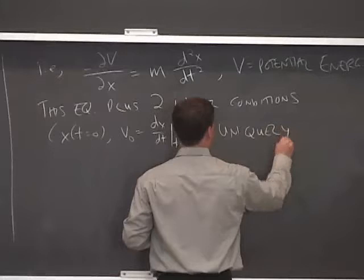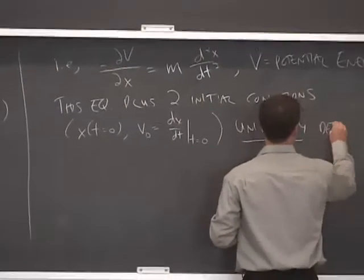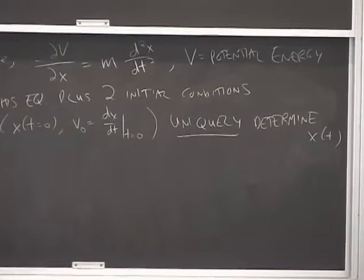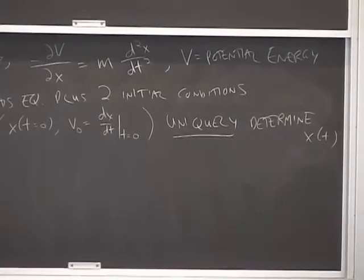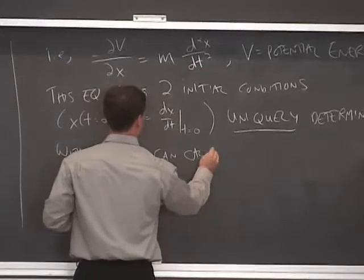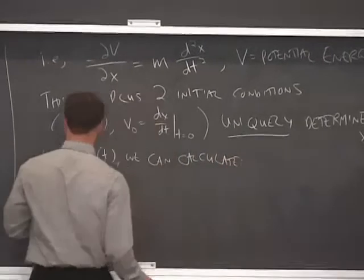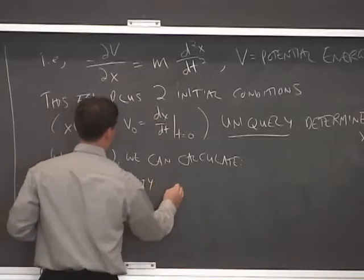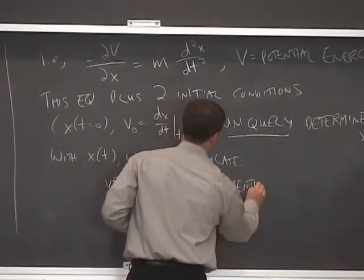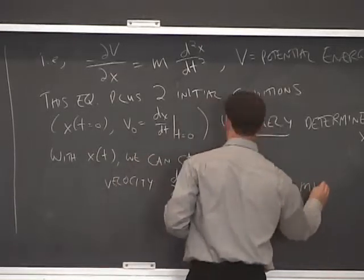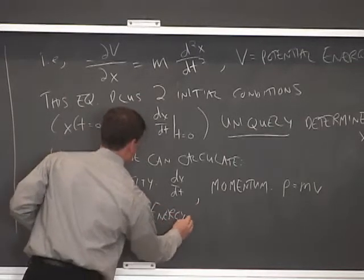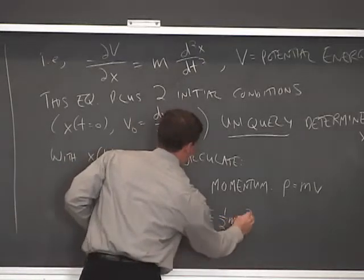This uniquely determines x. And of course, once x is known, then we can calculate many other parameters of interest. So with x, we can calculate parameters such as velocity, which is just dx/dt. Momentum. Once you know the velocity, we know the momentum. P, which is mass times velocity. We can calculate the kinetic energy T, which is one-half mv squared, etc.